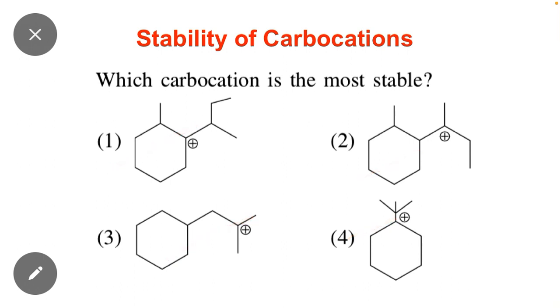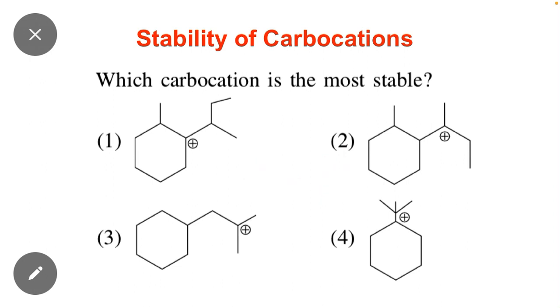The stability of carbocation depends on — you can say that stability of carbocation is directly proportional to alpha hydrogen. Greater the number of alpha hydrogen, greater the stability of the carbocation.